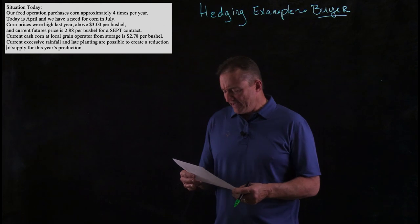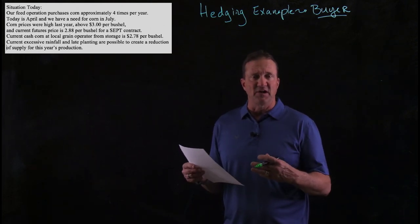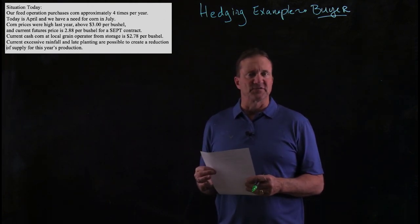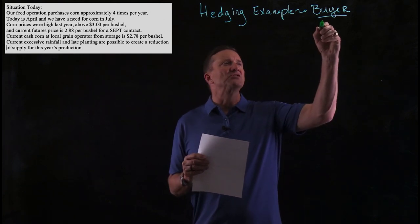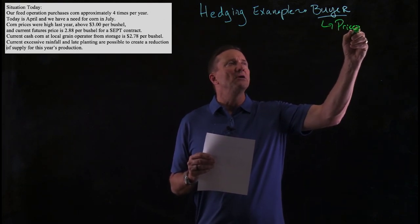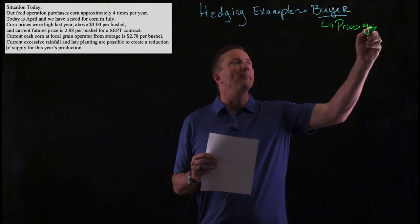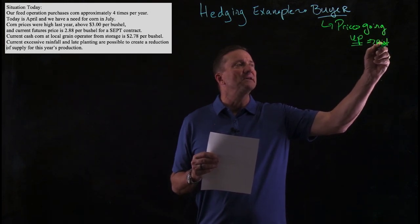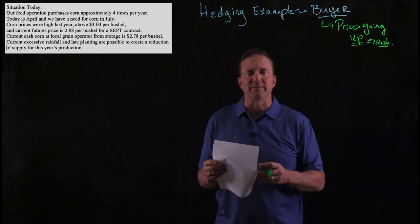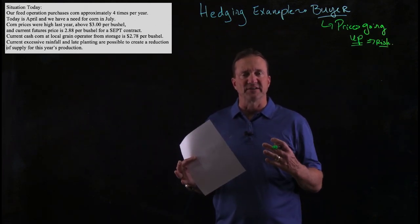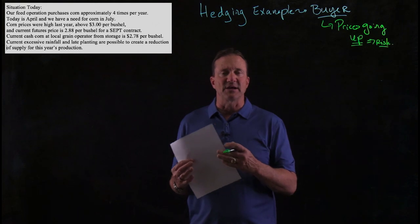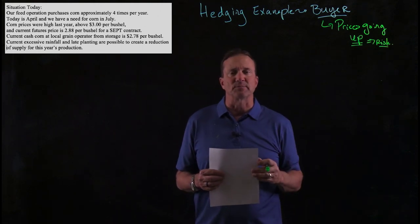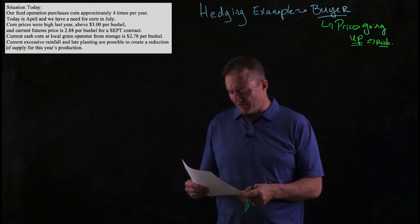The first question is: what does the excessive rainfall and late planting mean for the risk of the buyer? The answer is that the buyer is worried about prices going up — that is the risk in this situation. In fact, that's the risk for every buyer. Anytime you're a buyer, your risk is always the price going up. So it's a pretty easy answer to the question.